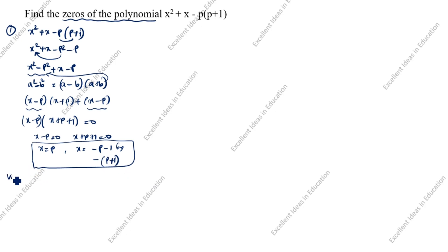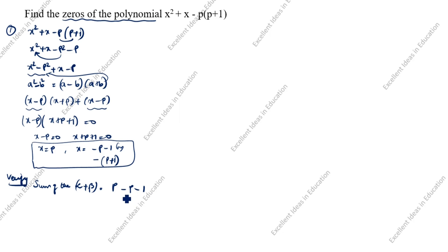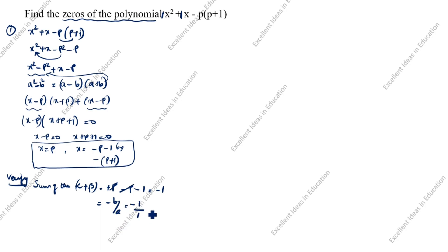Now we will verify whether this answer is correct. How? By the sum of the zeros: alpha + beta. Let alpha = p and beta = -(p + 1) = -p - 1. So alpha + beta = p + (-p - 1) = -1. Using the formula, sum of zeros = -b/a. Here b = 1, a = 1, so -1/1 = -1. Both answers are the same.